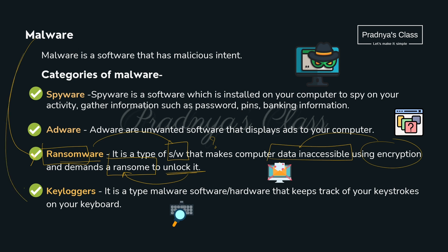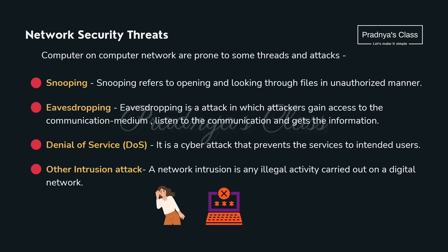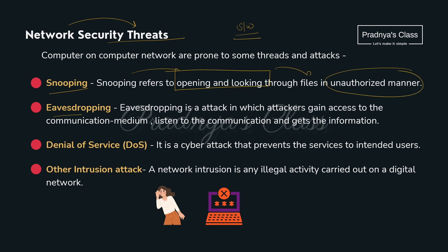Here is one more harmful program: Keyloggers. These can be hardware or software that keeps track of your keystrokes — as you type anything it gets recorded. Now let's study some network security threats. The first is Snooping — opening and looking through files in an unauthorized manner. The second is Eavesdropping — an attack in which attackers gain access to the communication medium, listen to the communication, and get information, potentially obtaining personal or confidential details.